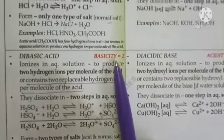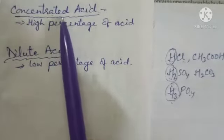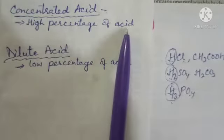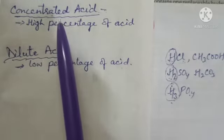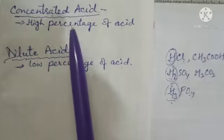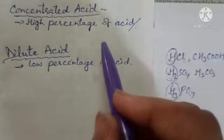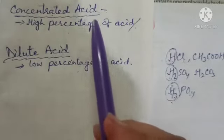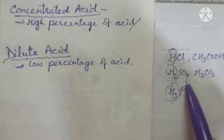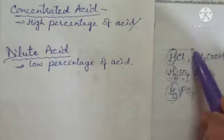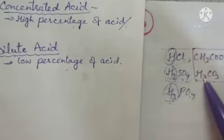What do we mean by concentrated acid and dilute acid? A concentrated acid contains a high percentage of acid, while a dilute acid contains a low percentage of acid. A strong acid may be concentrated or dilute depending upon the percentage of acid. If an acid contains more water it is dilute; if it contains less water it is concentrated. Similarly, weak acids like acetic acid and carbonic acid may also be concentrated or dilute depending on the percentage of acid.